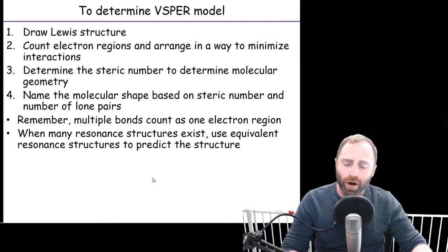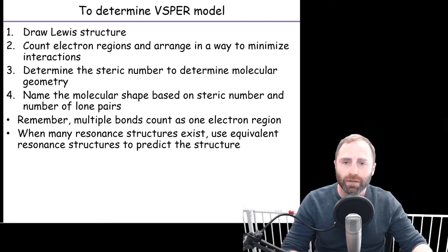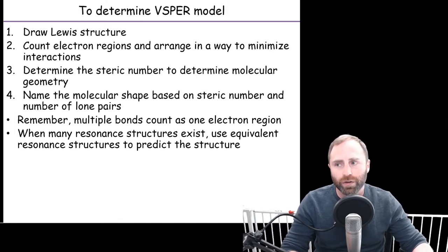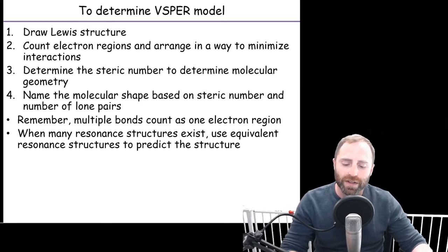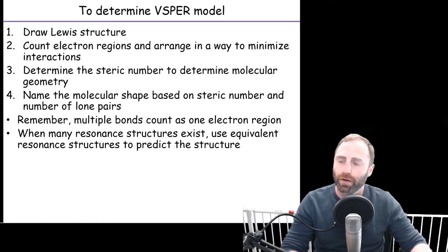In the case of something like carbonate, which we talked about in a previous video, you have multiple resonance structures. What you want to do is take the resonance structures that have the lowest amount of energy and use one of those equivalent Lewis structures to predict the structure of the overall molecule. In the case of carbonate, we were able to draw a structure where we had three bonding regions around the central carbon. There were three different ways we could write that out, but at the end of the day it was really only a steric number of three around the carbon, no matter what.